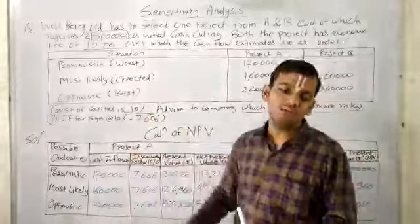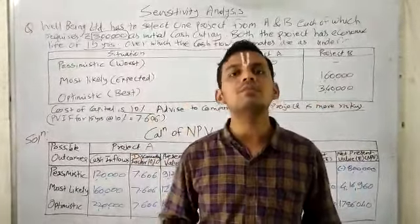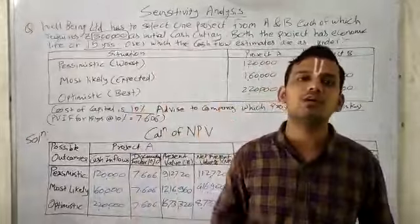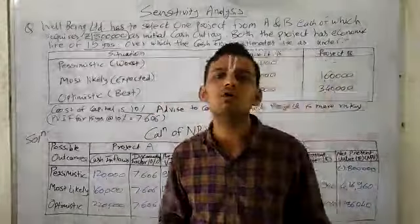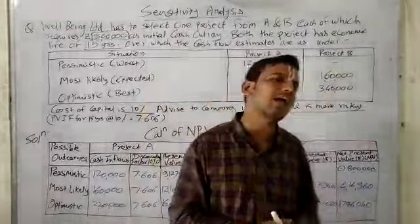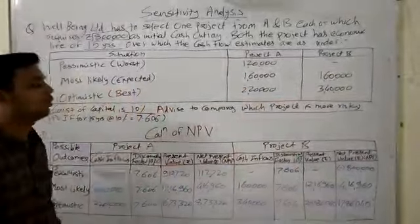One for Project A and one for Project B. In Project A, we have four subdivisions: first for cash inflow, second for discounting factor, third for present value, and fourth for net present value.